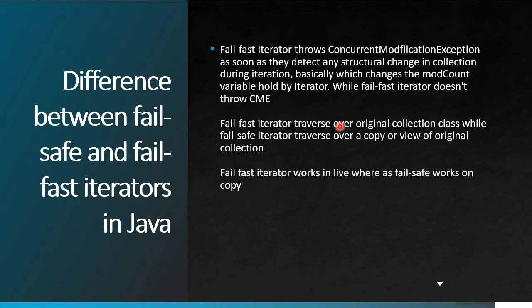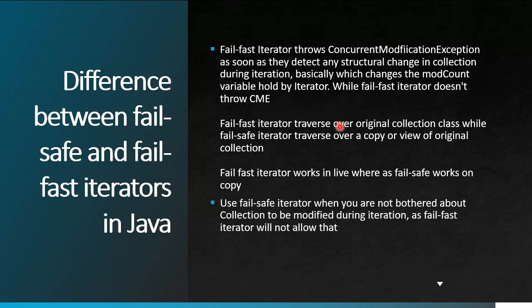Fail-safe works differently — it traverses over a copy of the collection object, not the original. So fail-fast iterates on the live object, while fail-safe iterates on a copy. We use a fail-safe iterator when we are not bothered about the collection being modified during iteration, since fail-fast would throw an exception in that case. If objects are changing inside the collection but we don't want an exception thrown, we use fail-safe.